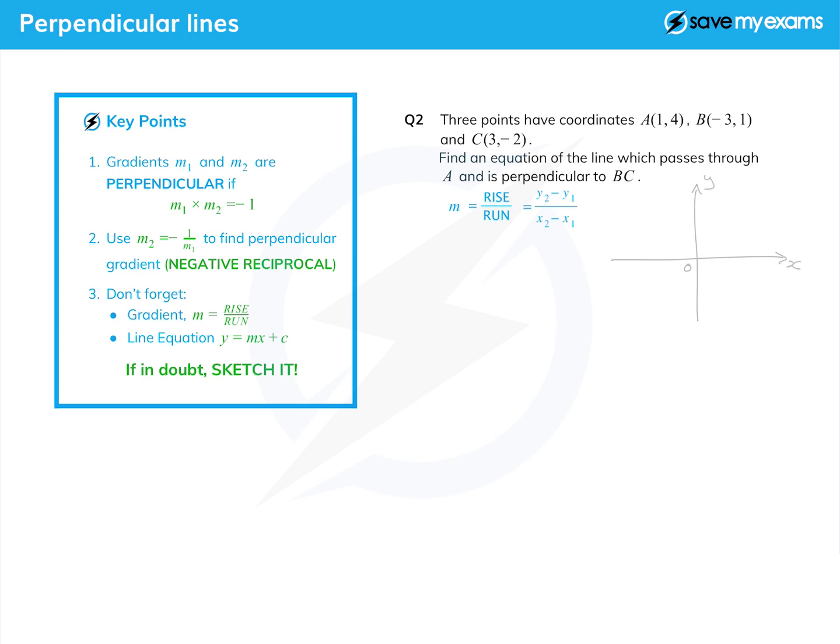We need a very rough sketch. Here's a pair of axes for us. If we just very roughly plot A which would be about there, that's (1, 4), B which is (-3, 1) so it's going to be about there, and C which is (3, -2) so that would be roughly there. We're told that the line passes through A and is perpendicular to BC. So there's BC and here is a line which is perpendicular to BC and passes through A. So this line is the one we want.